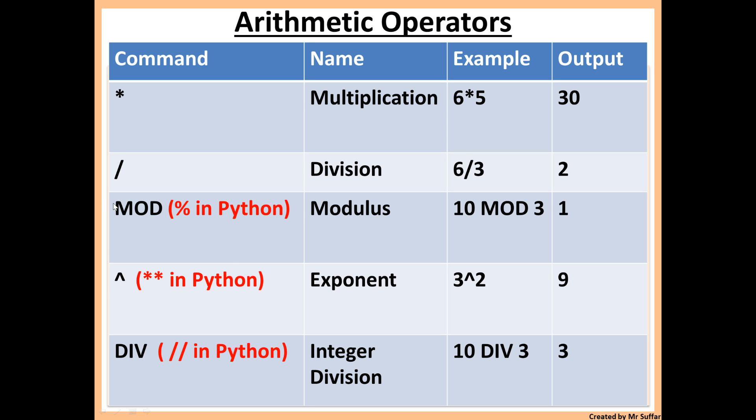In pseudocode we use MOD in capital letters to represent modulus, but in Python we use the percentage sign. Modulus is finding the remainder, so 10 MOD 3 means 10 divided by 3 with remainder, so the remainder here is 1.